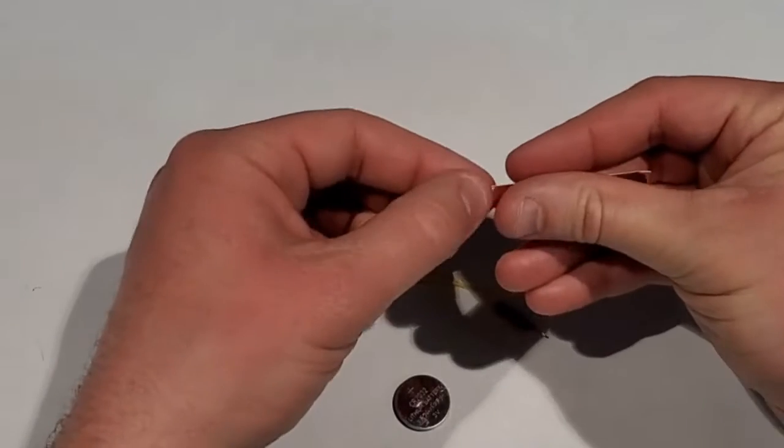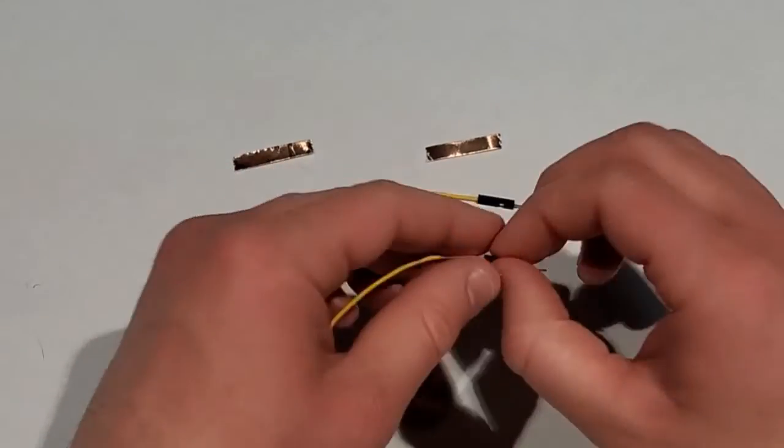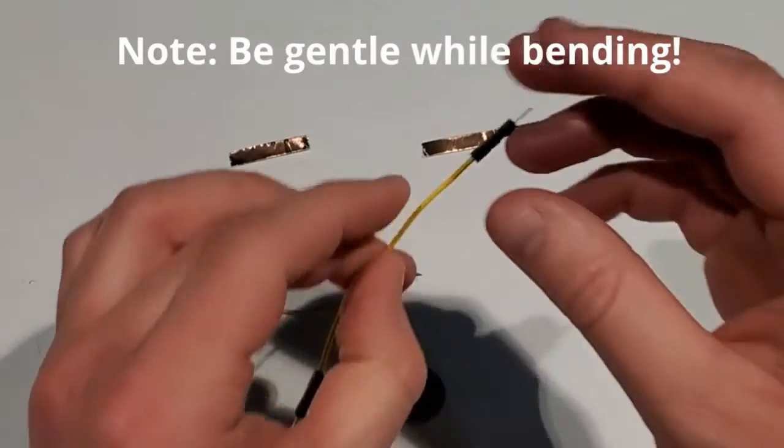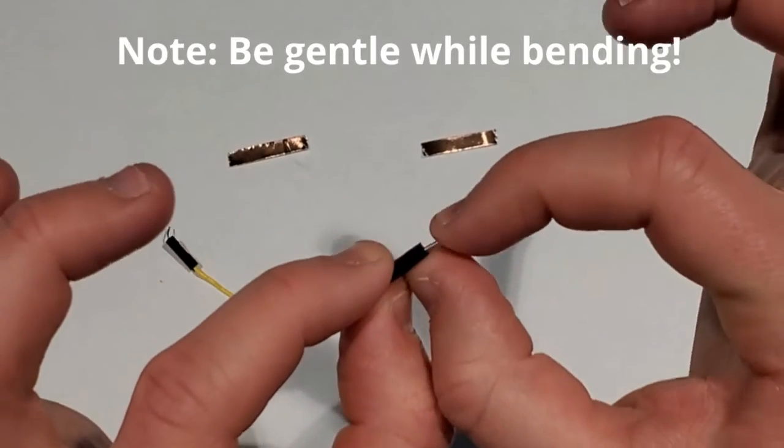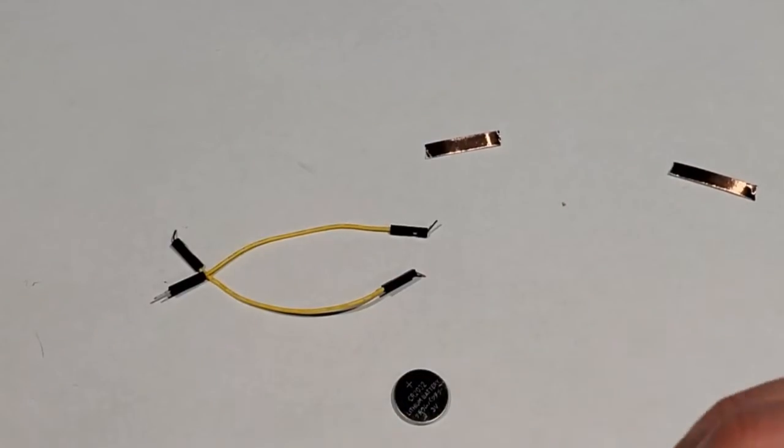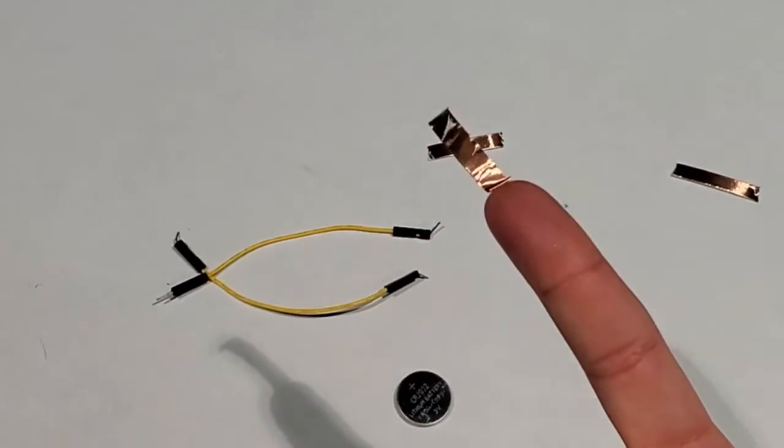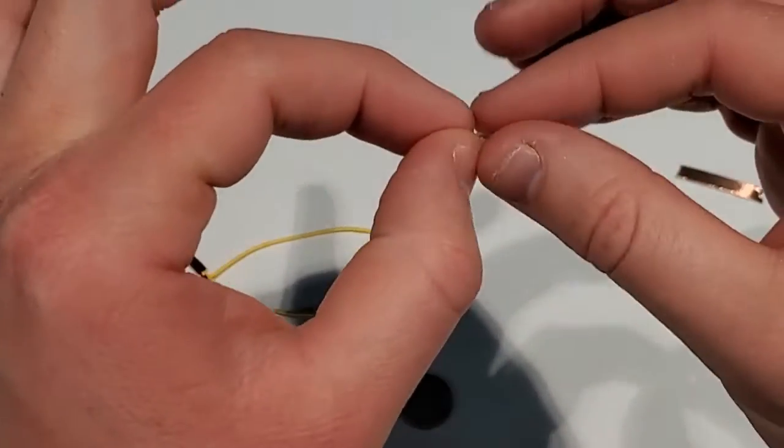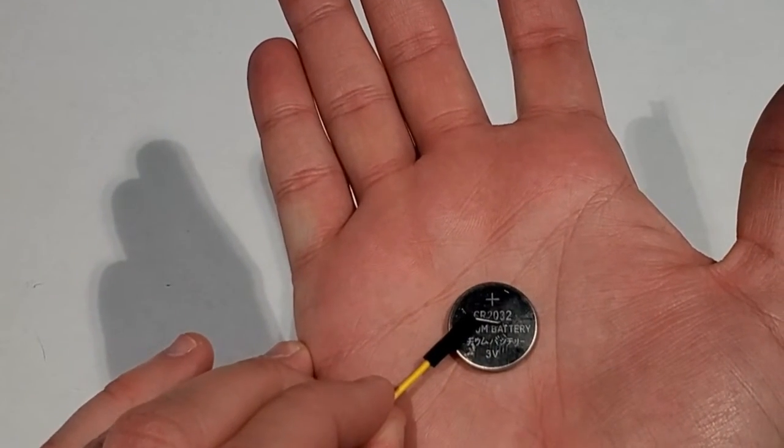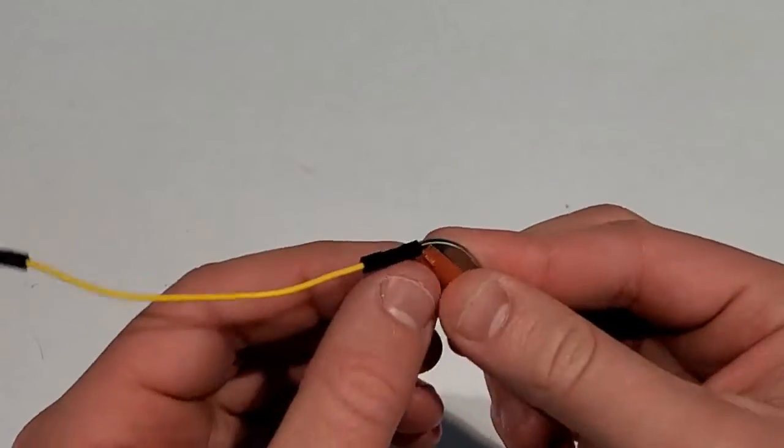To fasten your battery to your circuit you're going to take your two long wires with the black ends on them and bend them accordingly. This will let them lie flat on the battery. You can then take your piece of copper tape, rip it in half, and then peel it. You only need a small amount. You can then tape your wire to one side of the battery. You'll do the same with the other wire on the opposite side of the battery.